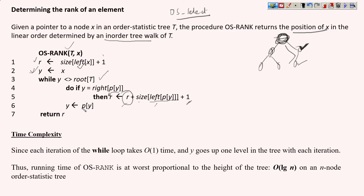After updating the rank, we assign Y to its parent and keep moving toward the root. Finally, we return the rank. The while loop takes constant time per iteration because we perform only one operation when the condition matches. Since each iteration is constant work, it does not significantly affect the overall cost of the operation.